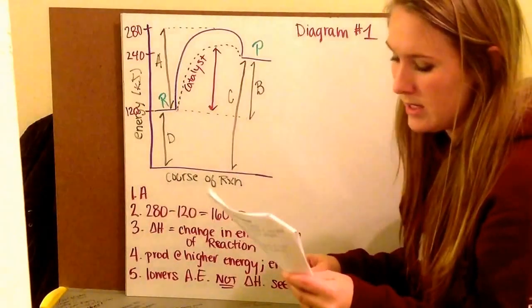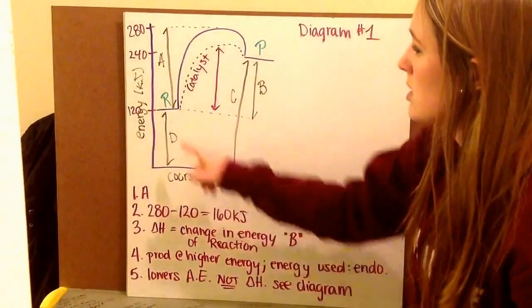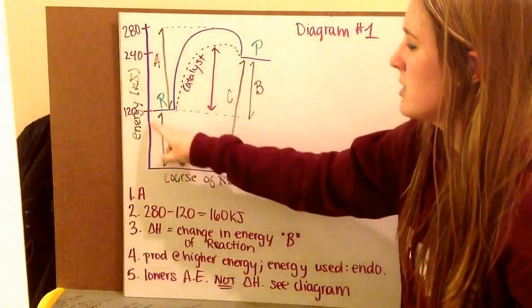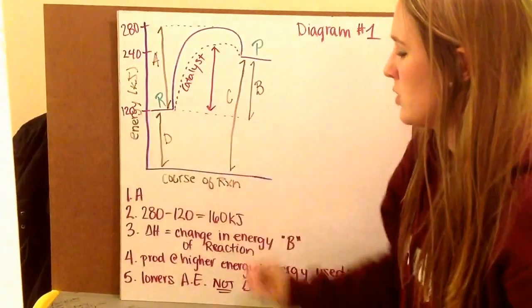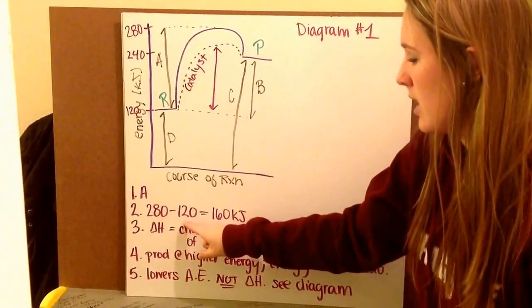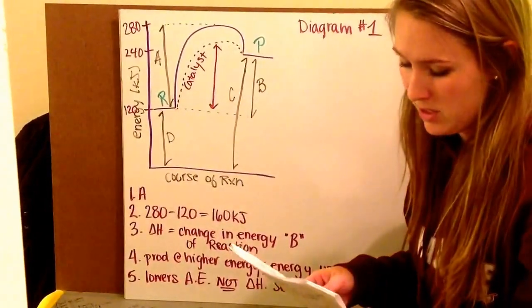Number two asks, what is the value of the activation energy in kilojoules? So that's my activation energy. I notice that the top of my peak is 280 kilojoules. At the bottom of reactants is 120 kilojoules. So 280 subtracted from that 120 is 160 kilojoules. That's my amount of my activation energy required.